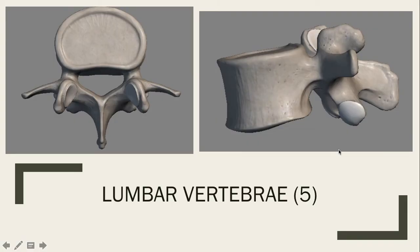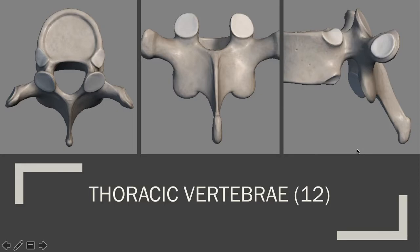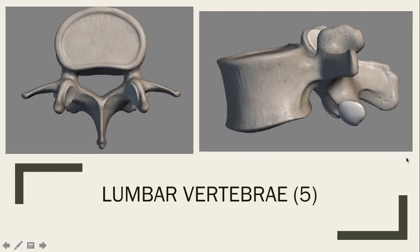With the lumbar vertebrae, the biggest difference is that they are a lot bigger and a lot hardier. These processes here look a little more stubby. The difference between the lumbar spinous process and the thoracic spinous process is pretty significant. They still have the superior articular facet and process and inferior articular facet and process. They also have a body, but it is much, much larger. The transverse processes don't have those costal facets.